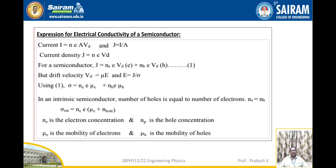Expression for electrical conductivity of semiconductors. We know that current I equal to Nev_D and current density J equal to I/A. Further, current density J equal to Nev_D. For a semiconductor, J equal to N_e × e × v_D + N_H × e × v_D (equation 1). The drift velocity v_D equal to μ × E, and further E equal to J/σ. Using equation 1, we can write σ equal to N_e × e × μ_e + N_H × e × μ_H.